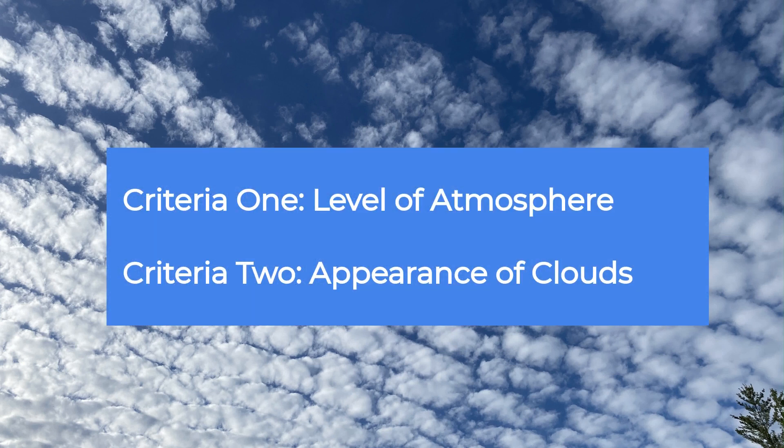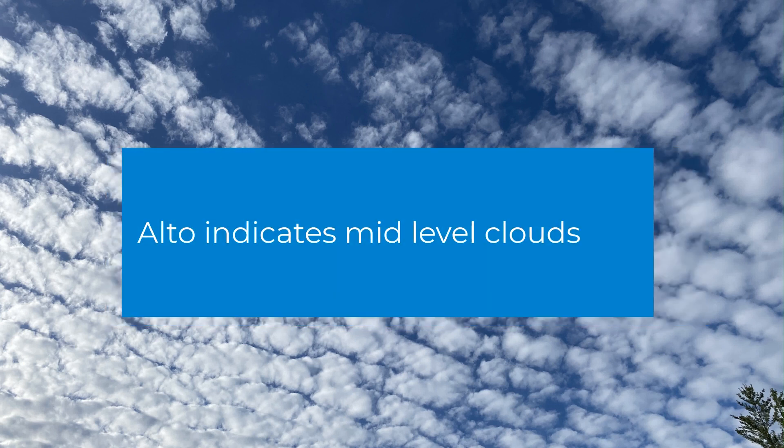We name our clouds based on two main criteria. The first is the level of atmosphere where the clouds are located. The second is the appearance of the clouds. In the case of Alto Cumulus Clouds, the 'Alto' part of the name indicates that these are mid-level clouds, meaning they are located between 2,000 and 6,000 meters above the ground.